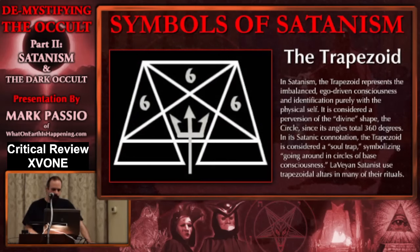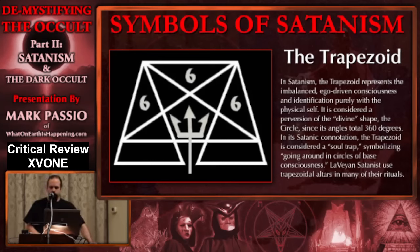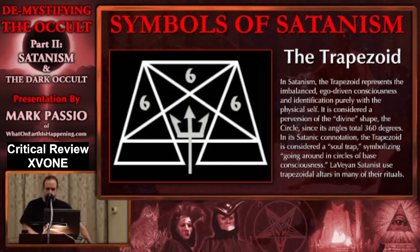One of the main symbols of Satanism — particularly LeVayan Satanism — that I haven't discussed prior to this is the trapezoid. In Satanism, the trapezoid represents the imbalanced, ego-driven consciousness — an identification purely with the physical self. It is considered a perversion of the so-called divine shape, the circle, since its angles total 360 degrees. In its Satanic connotation, the trapezoid is considered a 'soul trap,' symbolizing going around in circles of base consciousness.